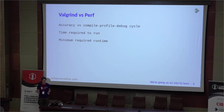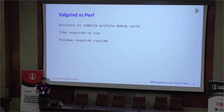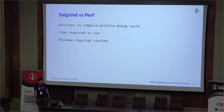For Perf, you're doing sampling-based profiling, which typically means you need a minimum run time for your program. If your test case is not running for at least about 10 to 20 seconds, it's kind of hard to get decent data out of it. Valgrind, on the other hand, gives you accurate data no matter what, but it just takes quite a long time to get an answer.